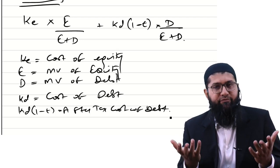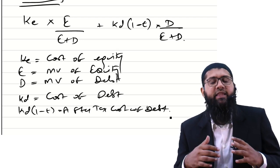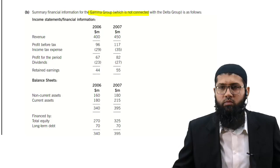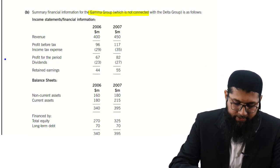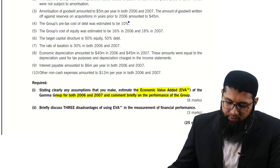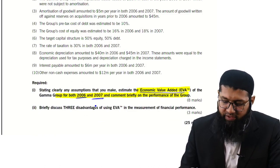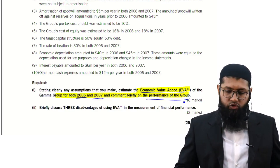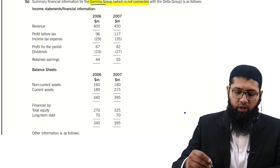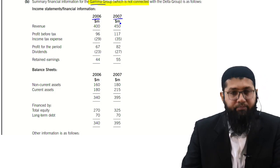To summarise: EVA uses all these adjustments — NOPAT, WACC, and adjusted capital employed. A positive EVA means value has been created; a negative EVA means value has been deteriorated. We now turn to examination questions to apply this concept. The first worked question is the Gamma Group, requiring EVA calculation for 2006 and 2007, and a brief comment on performance.